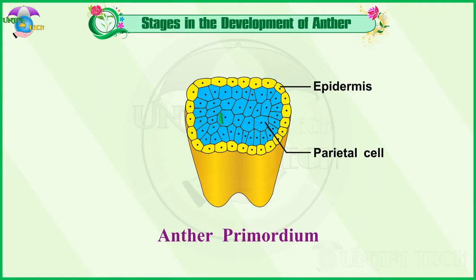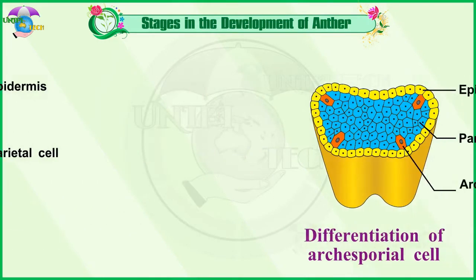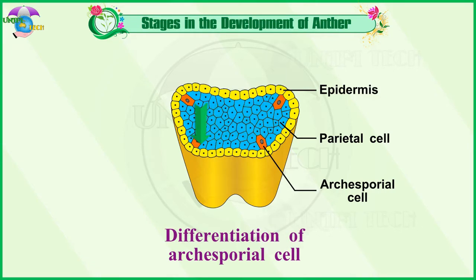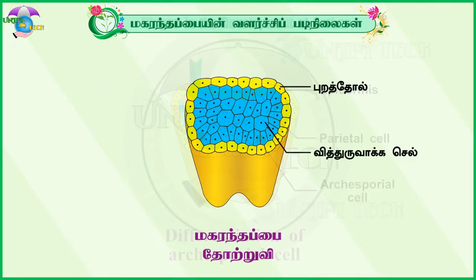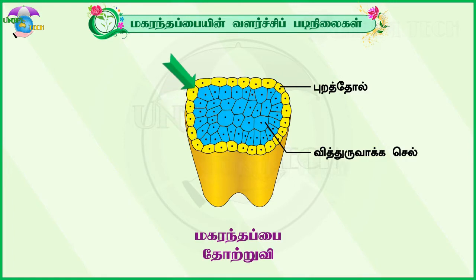A very young anther develops as a homogenous mass of cells surrounded by an epidermis. During its development, the anther assumes a four-lobed structure.